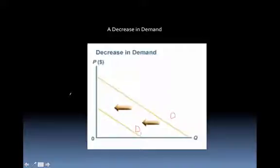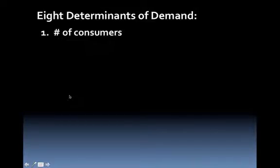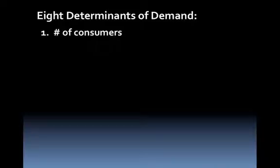The first of the eight determinants is number of consumers. You could argue that the next seven are all variations of a difference in the number of consumers, and you'd be correct, but they'll be more specific. If the number of consumers increases — if there are more people demanding something — the demand line moves to the right. If there are fewer consumers and people stop buying the product, there's going to be a shift to the left. It won't affect price directly, but it will affect the number of people in demand for it.